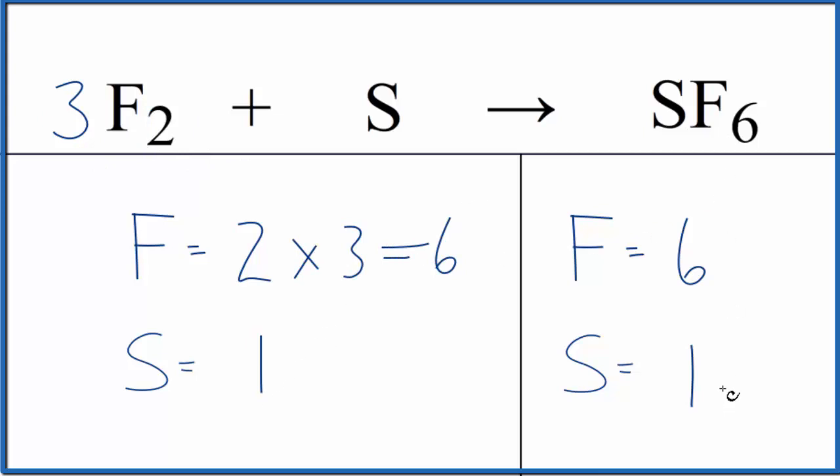And these numbers would be the same as these. This equation is balanced. If you were asked to report the coefficients, you could say 3, 1, 1. We don't write the ones by convention.